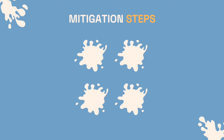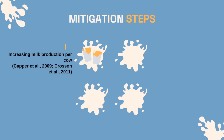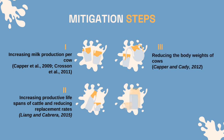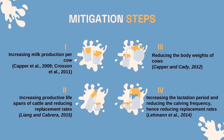Moving on to the mitigation steps and conclusion. There are four suggested mitigation steps. First, increasing milk production per cow (Capper et al., 2009; Crossan et al., 2011). Second, increasing productive life spans of cattle and reducing replacement rates (Liang and Cabrera, 2015). Third, reducing the body weights of cows (Capper and Caddy, 2012). Fourth, increasing the lactation period and reducing calving frequency, hence reducing replacement rates (Lehman et al., 2014). All mitigation steps point towards reduced maintenance and pregnancy requirements per kg of milk, due to keeping fewer cows for the same amount of milk, fewer young stock, fewer calves, or less body weight per productive cow.